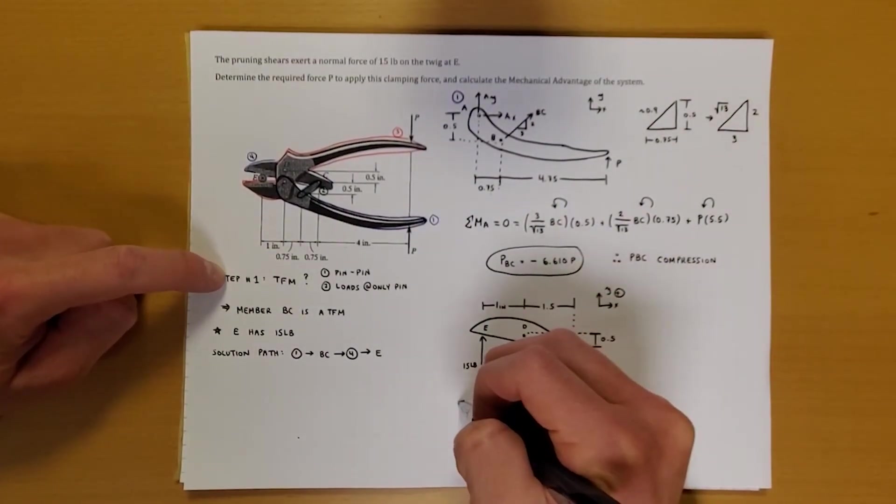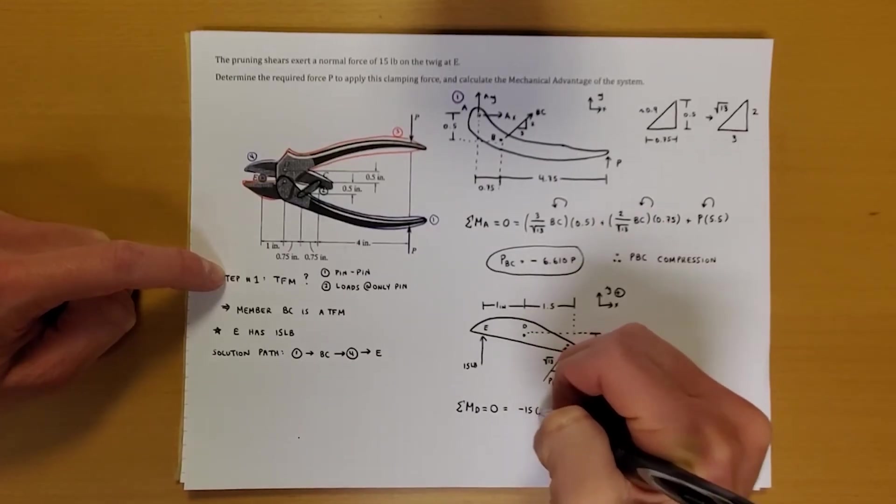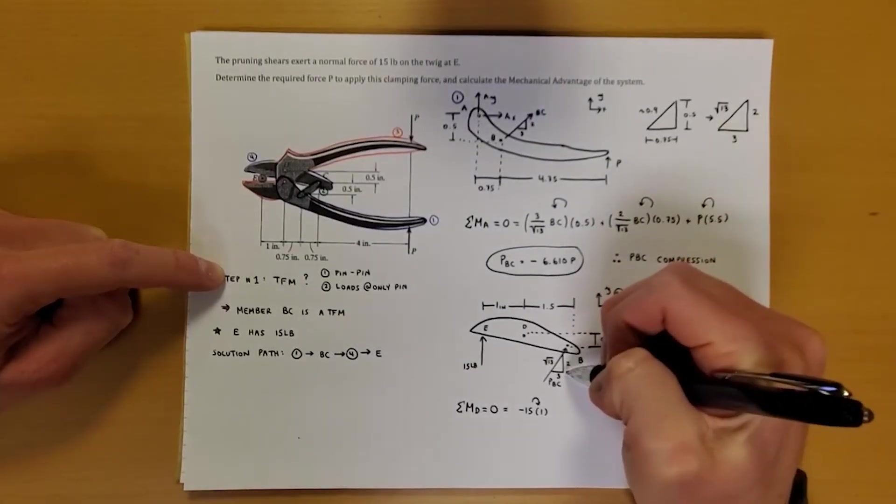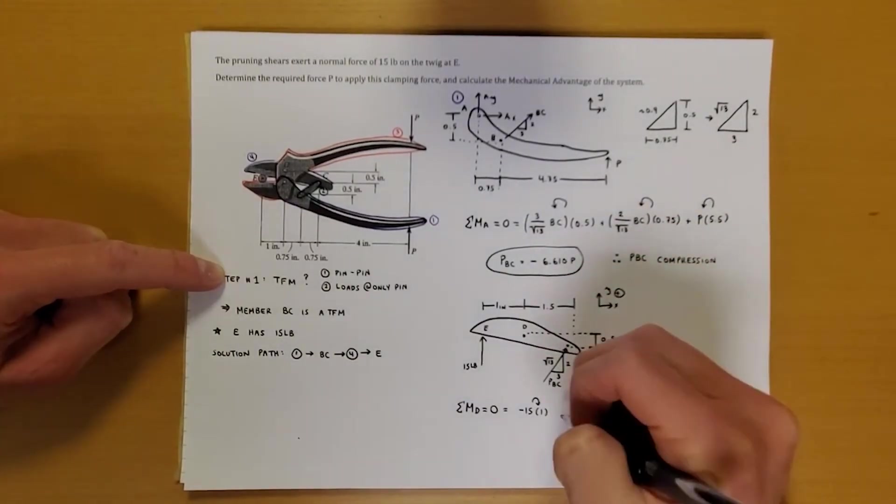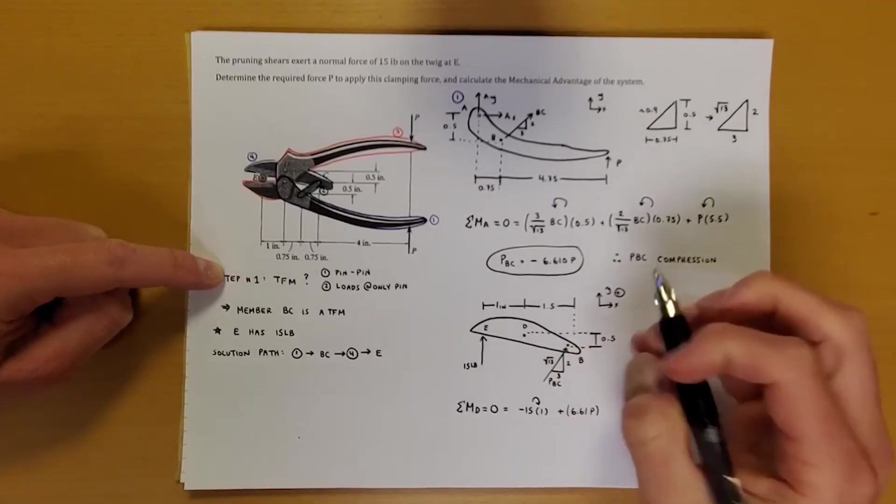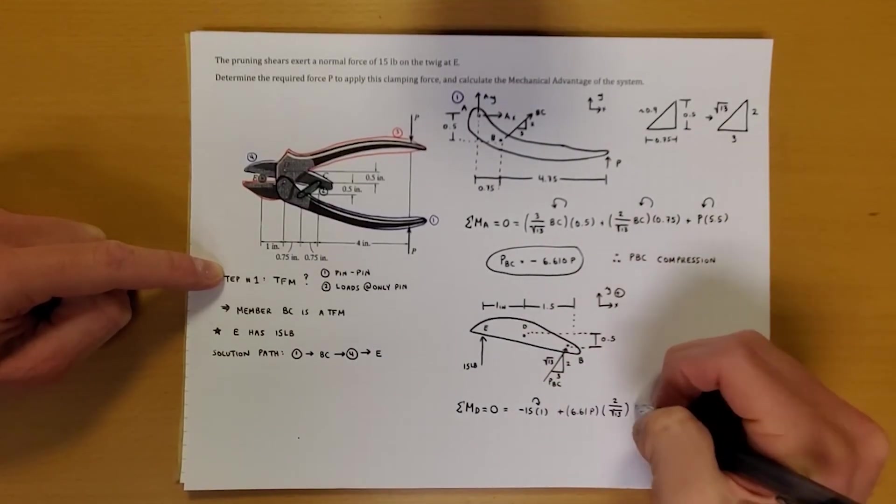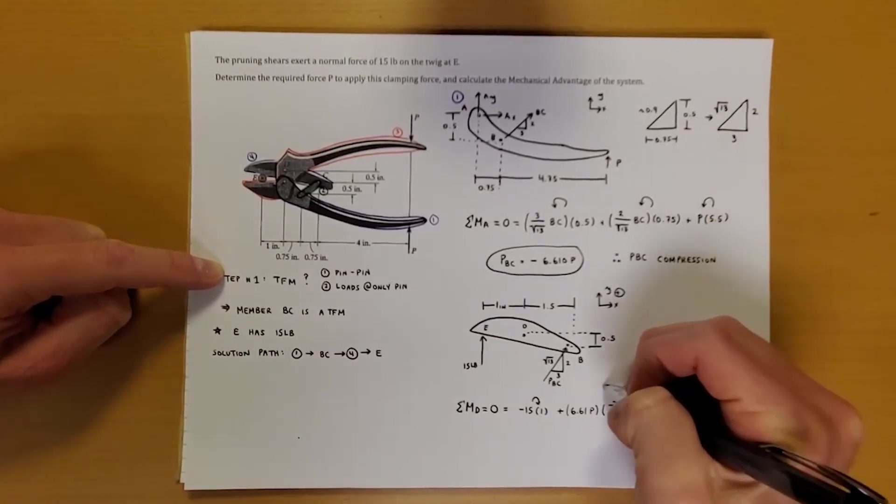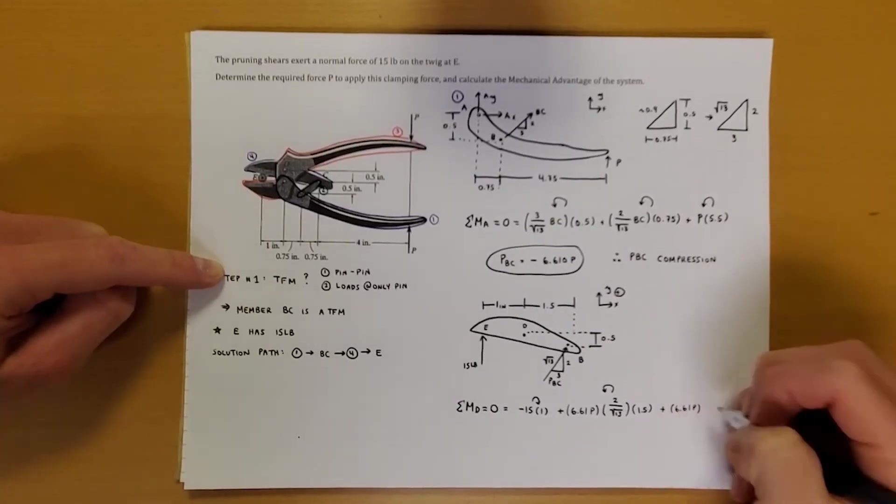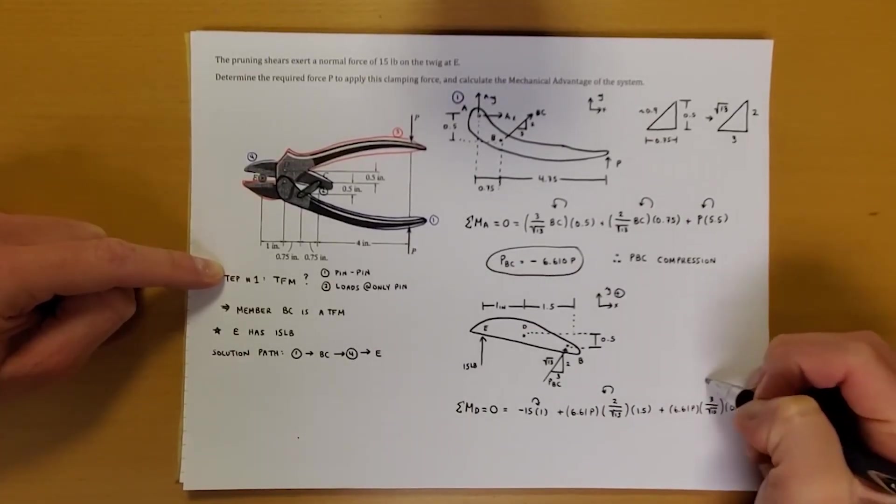So now what we do to solve is I can sum the moments about point D. I'll set this equal to 0. That gives us 15 times 1, which is negative because it's clockwise. Now we have two components of BC. And if we look, the Y component is going to be counterclockwise and the X component is also going to be counterclockwise. So we have plus 6.61P from before times 2 over root 13. So we're doing the Y component first, times 1.5. And this would cause a counterclockwise moment. And then last but not least, we have plus 6.61P times 3 over root 13 times 0.5. And this will also be counterclockwise.